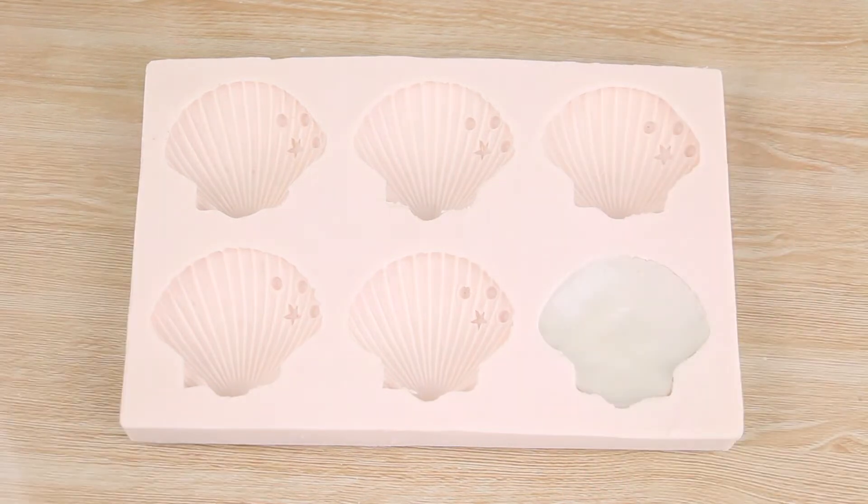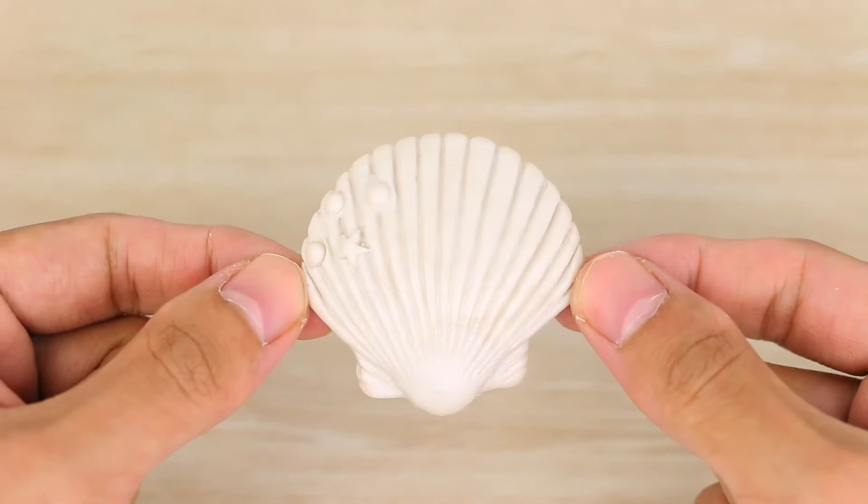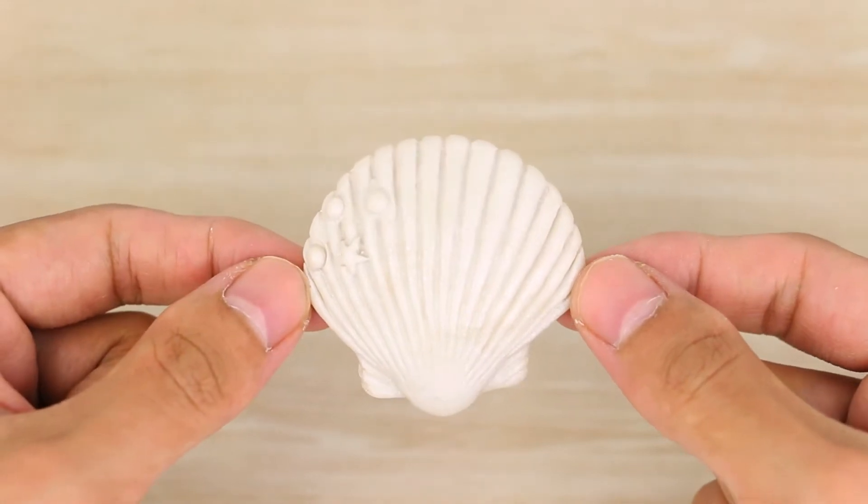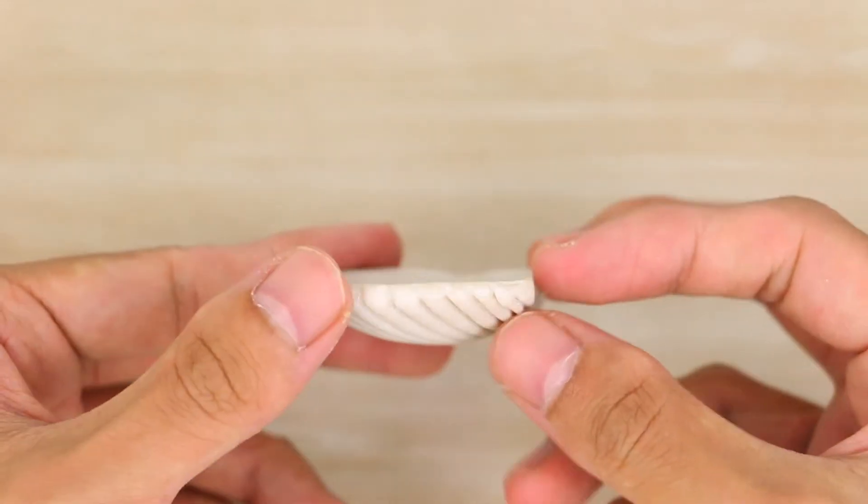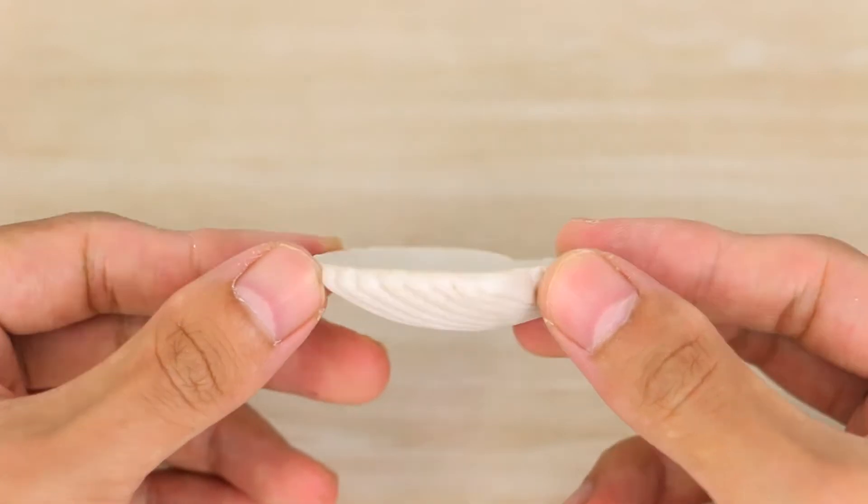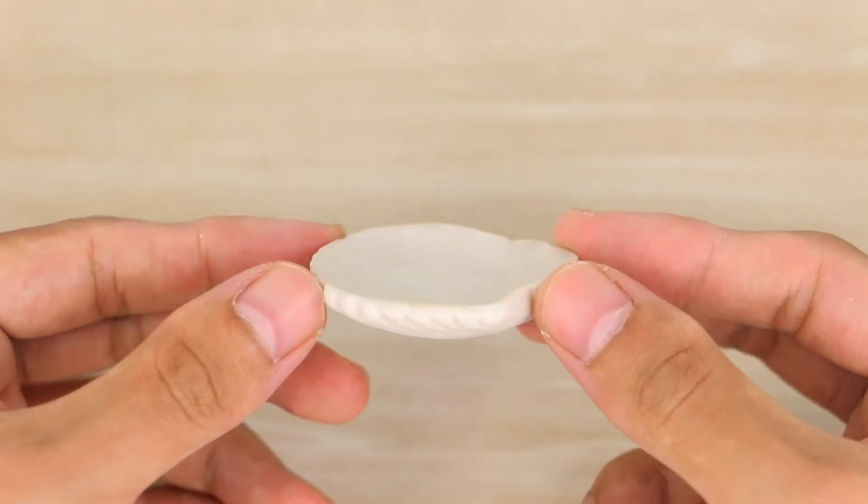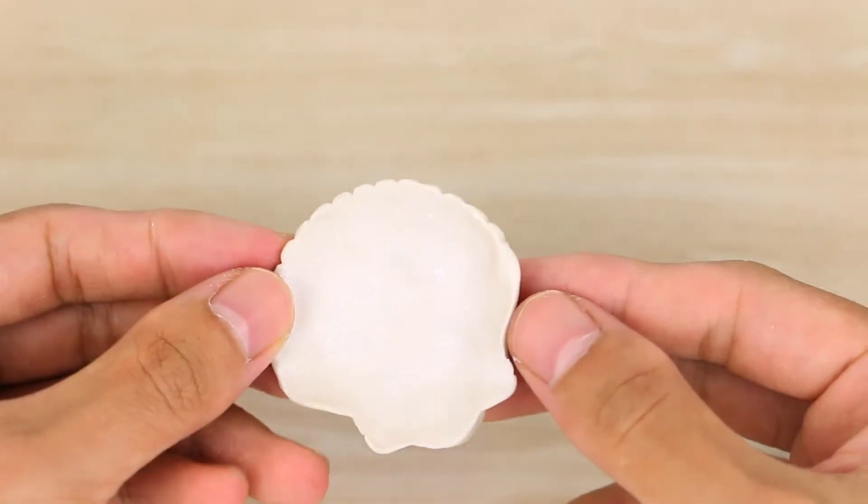Then going to go ahead and remove it from the mold and bake it using my package's instructions. Once it's fully cooled down, it should look like this. You can see that it has kind of a curve in it.